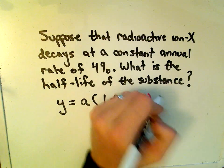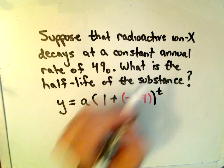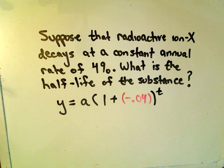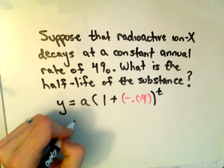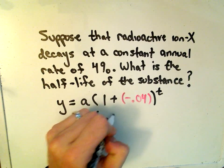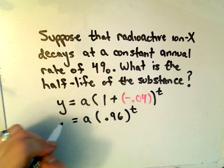So this is going to be our annual growth rate in this case, the negative indicating that it's decreasing by 4%. So here I would just simplify this down, and we would get 0.96 raised to the t power.